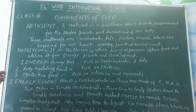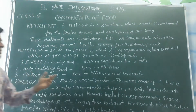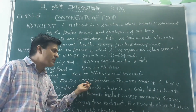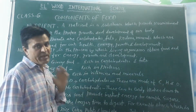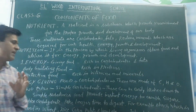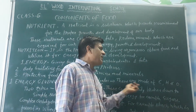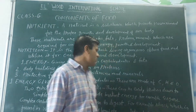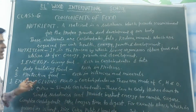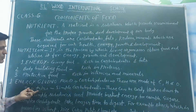First of all, we will study energy-giving foods. Energy-giving foods are carbohydrates. Carbohydrates are the main sources of energy. They are made up of carbon, hydrogen, and oxygen. Carbohydrates can be divided into two categories: simple carbohydrates and complex carbohydrates.